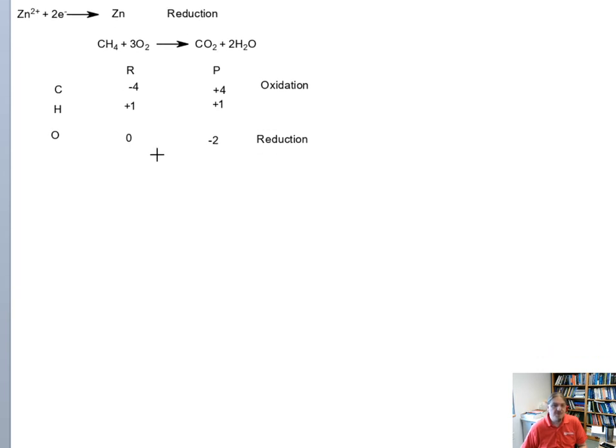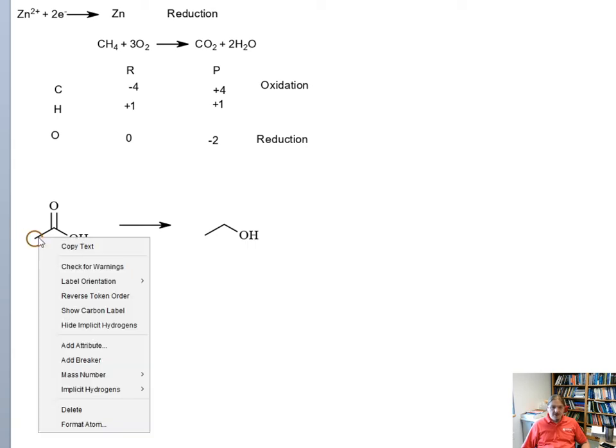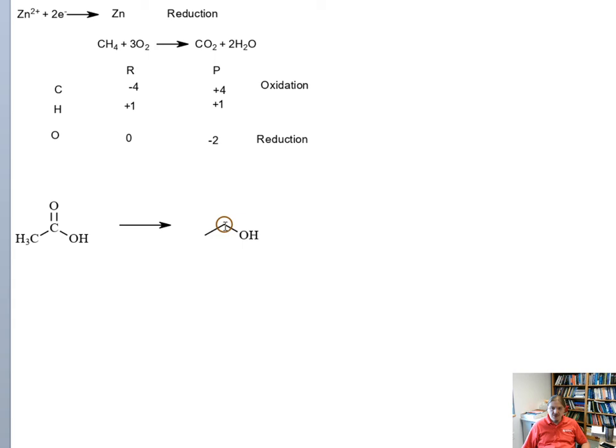We can use a similar approach in organic chemistry where we might have a reaction where we are converting, say, a carboxylic acid into an alcohol. And since this video is part of a sequence on properties of alcohols, I'm going to use alcohols for a lot of my examples, but not all of them. And it's important here, I want to actually show all of the atoms in the structure. And I'm only going to calculate the oxidation state here for the position that changes, which is this carbon atom in the middle.